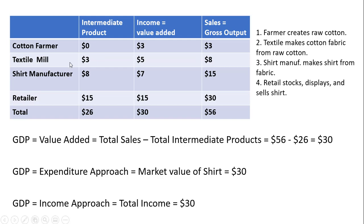Moving down, the textile mill buys the farmer's raw cotton and turns it into cotton fabric, selling that woven fabric to the shirt manufacturer for $8. The value-added for the textile mill is $8 minus $3, which equals $5. The shirt manufacturer takes the woven fabric, turns it into a shirt, and sells that shirt to the retailer for $15. The value-added for the shirt manufacturer is $15 minus $8, which gives us $7.